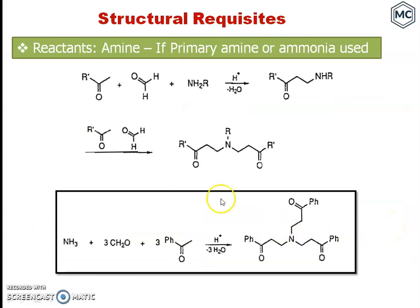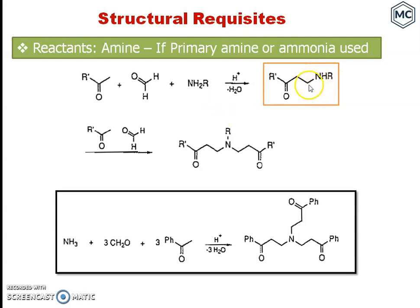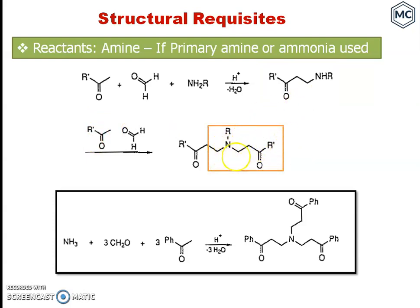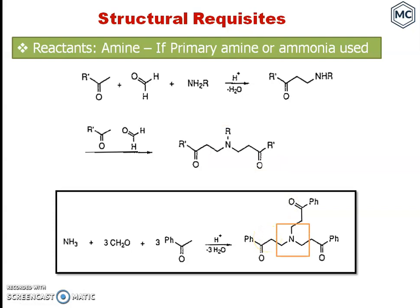Next, we check the structural requisites of the Mannich reaction, considering the amine first. What is the preferable amine? If you use primary amine or ammonia, the primary amine formed can act as a Mannich base with formaldehyde and react again with the ketone, causing multiple Mannich reactions. If ammonia is used, it first forms a primary amine base, then a secondary amine, and further reaction occurs. So the best amine is secondary amine.